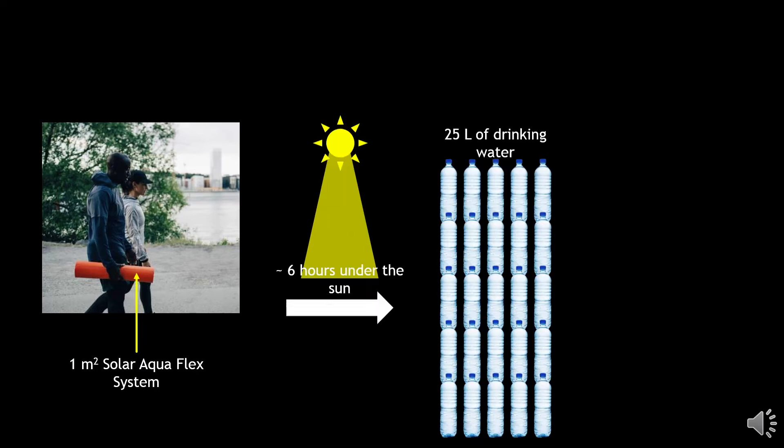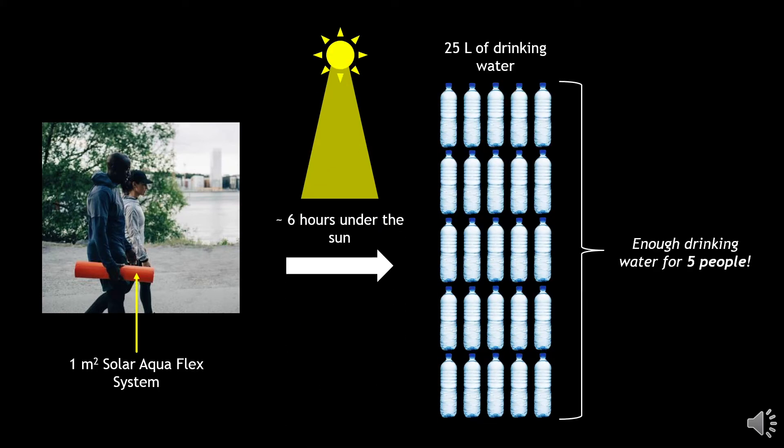With Solar Aquaflex's new and improved design strategy, a 1 square meter system can be carried by one person and provide drinking water for up to 5 people.